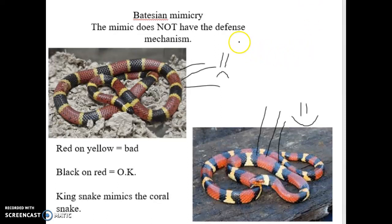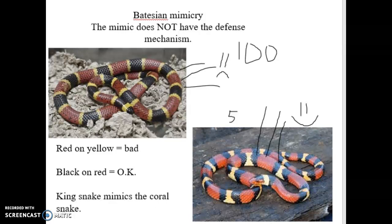The only way Batesian mimicry works is if the population ratios are skewed. If you have a hundred deadly ones and only five mimics in the community, a predator that attacks is almost guaranteed to get the nasty one — the one that possesses a real defense mechanism. So it learns not to mess with anything that looks like that. The mimic looks dangerous but never actually has to be dangerous. If those population ratios shift, Batesian mimicry collapses and doesn't work, which becomes a big problem for both species.